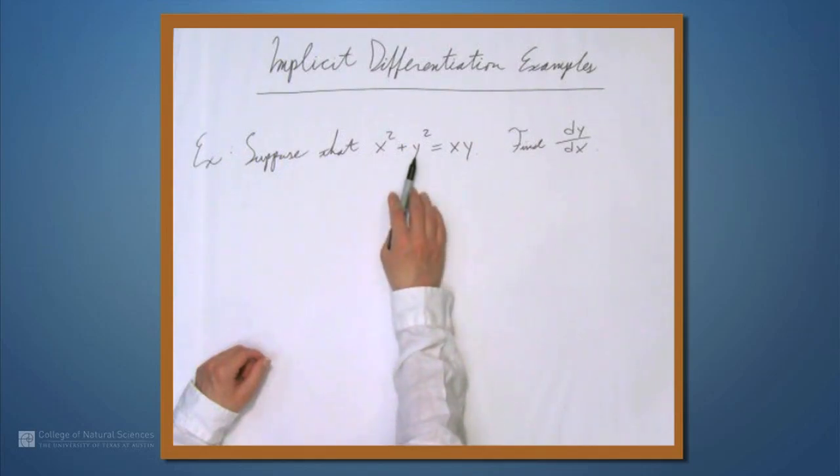But we can still find dy/dx as long as we know the chain rule. So here we're going to differentiate everything the way we normally would, but every time we see a y, we're going to remember that y is implicitly a function of x. So we're going to apply the chain rule whenever we differentiate something involving y.